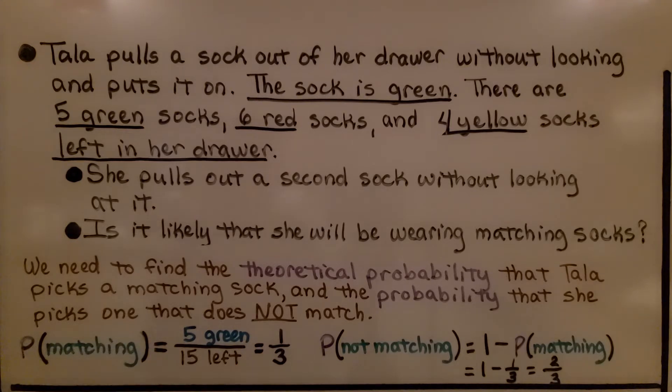The probability of not matching would be one minus the probability of matching. If one third is the probability of matching, then two thirds must be the probability of not matching. We take one whole and subtract that probability of matching, one third, and it's equal to two thirds.